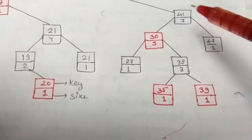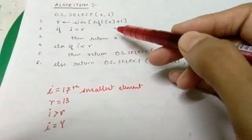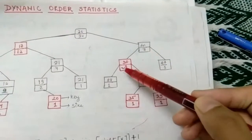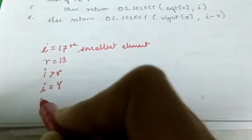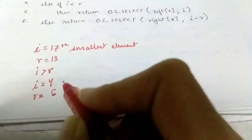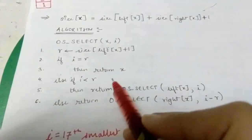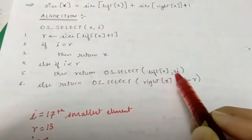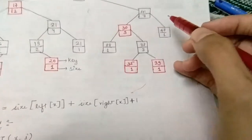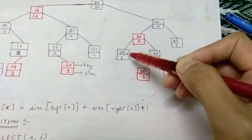Now at node 41, i is 4 and the algorithm restarts. r equals size(left(x)) plus 1, which equals 6. We check the condition: here i is less than r, so we return OS-Select(left(x), i) and move to the left child of node 41.